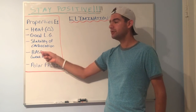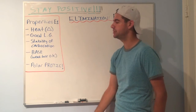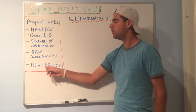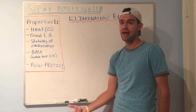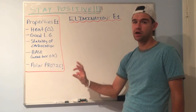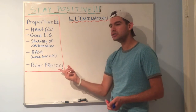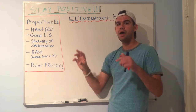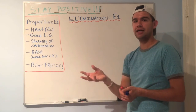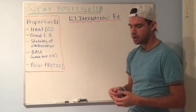You need the base because you're deprotonating a hydrogen. Finally, you need polar protic solvent — same reason as SN1 — you want to stabilize that carbocation. In a protic solvent, you can have hydrogen bonds to stabilize that positive charge.